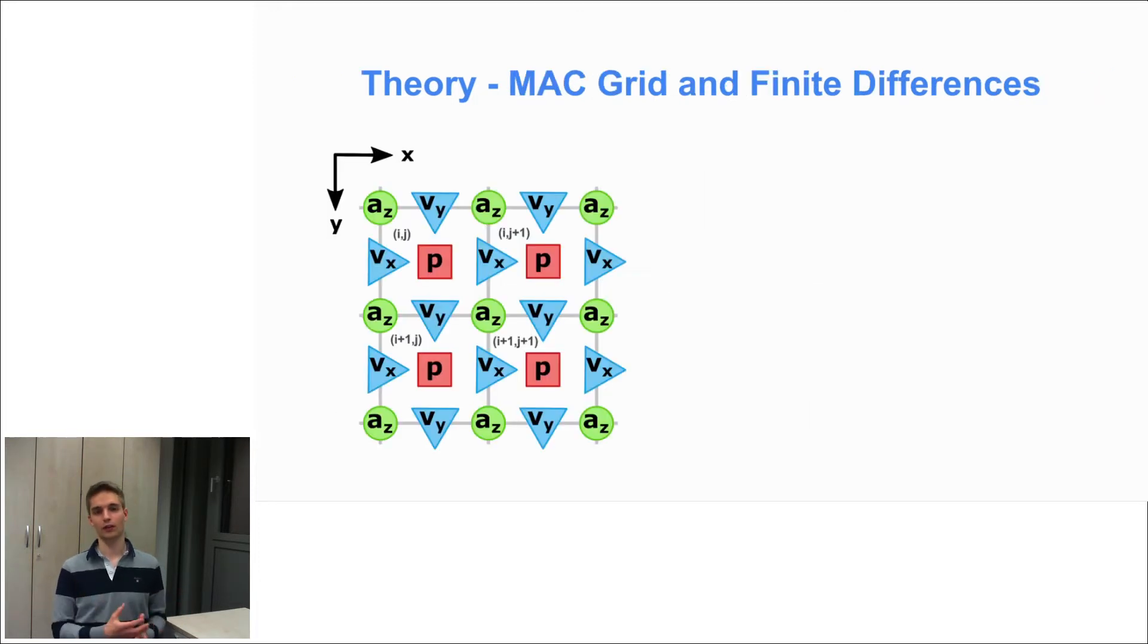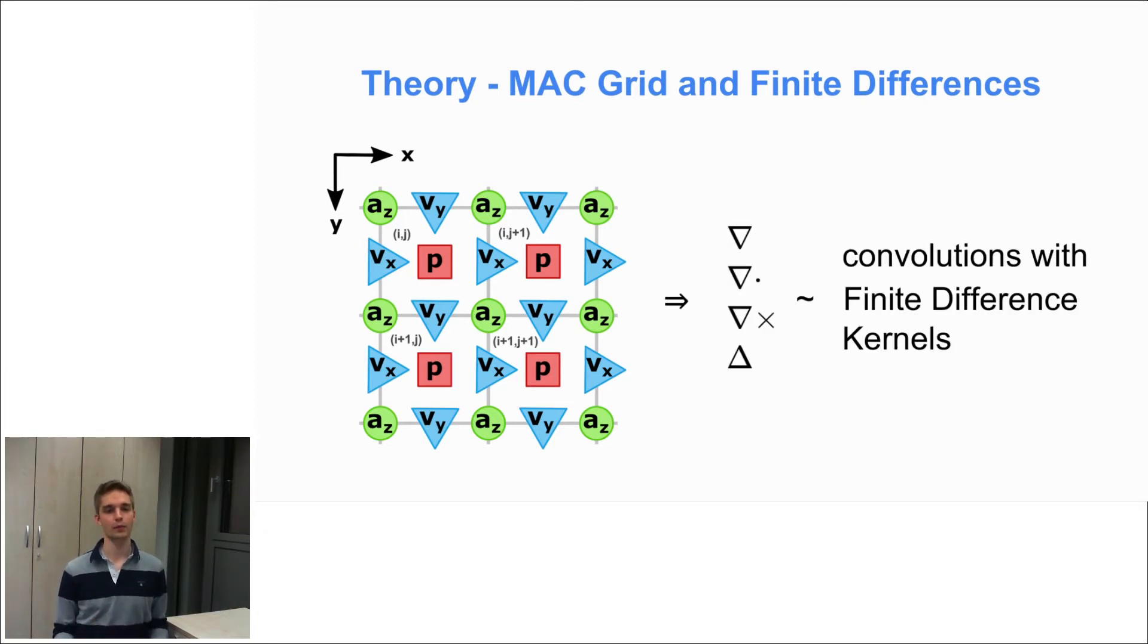Now to discretize our fluid domain we chose the marker and cell grid which places the vector potential, the x and y components of the velocity field, and the pressure field in a staggered manner as can be seen here on the left. And this way we can very efficiently compute the gradient, divergence, curl, and Laplace operations by doing convolutions with finite difference kernels.